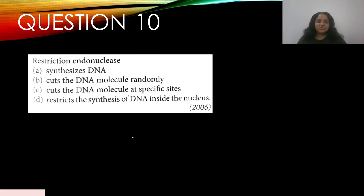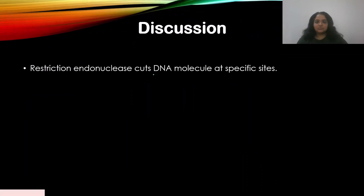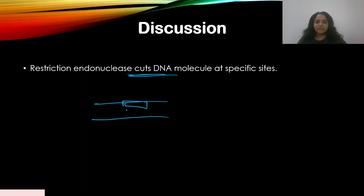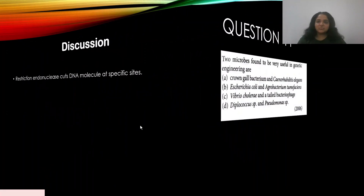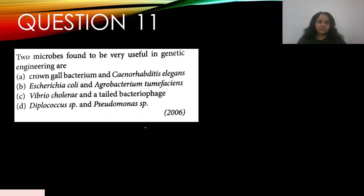Question 10: Restriction endonuclease — this appeared in 2006. Options: A — synthesizes DNA, B — cuts the DNA molecule randomly, C — cuts the DNA molecule at specific sites, D — restricts synthesis of DNA. The answer is C. Restriction endonucleases have recognition sequences in the DNA fragment; they identify those palindromic recognition sequences and make specific cuts only at those positions, not anywhere else.